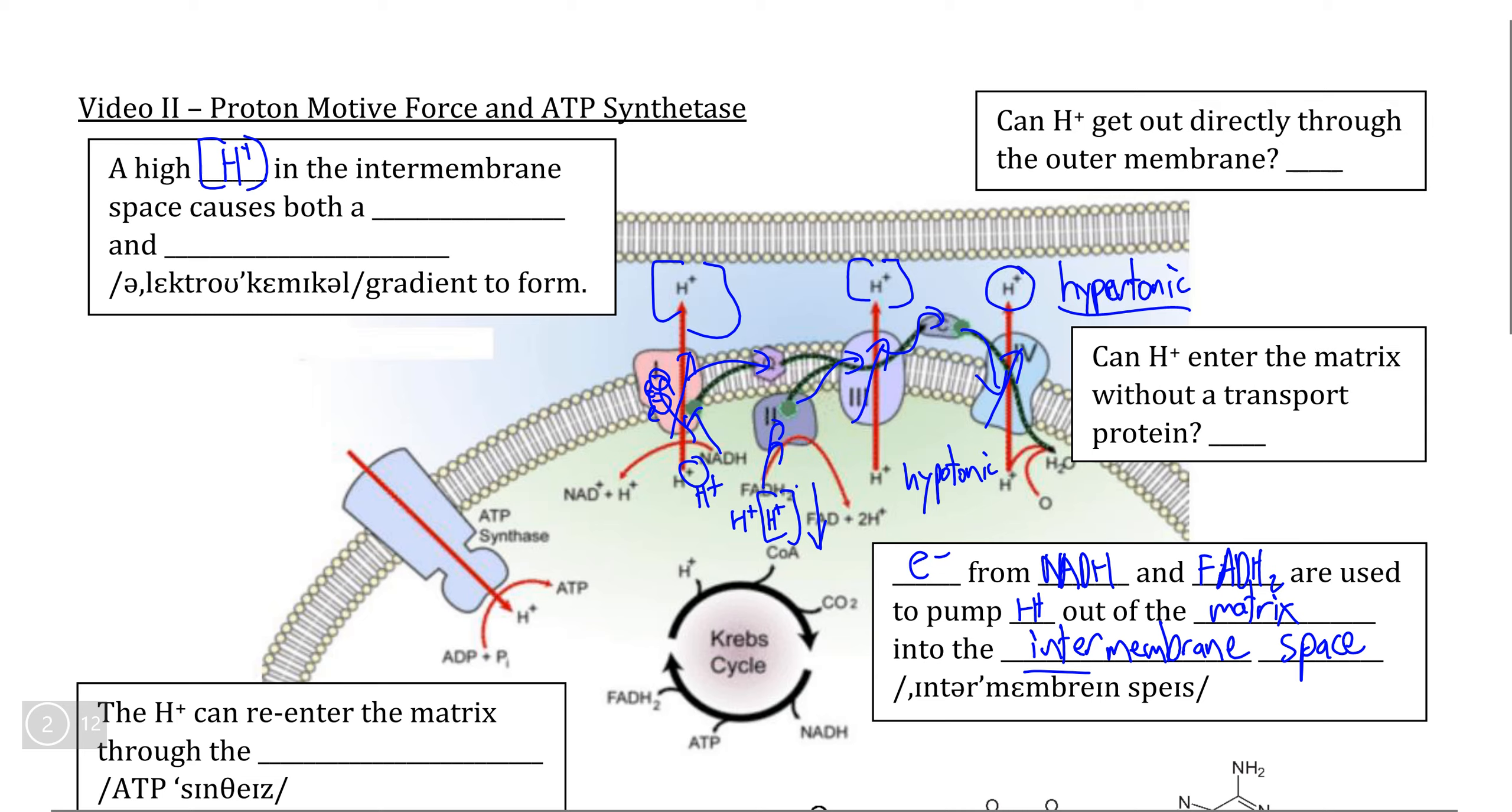Because of the fact that H plus is an ion, not only are we creating a concentration gradient from the high concentration of H plus, but we are also creating what is called an electrochemical gradient. This is simply because of the fact that H plus is an ion.